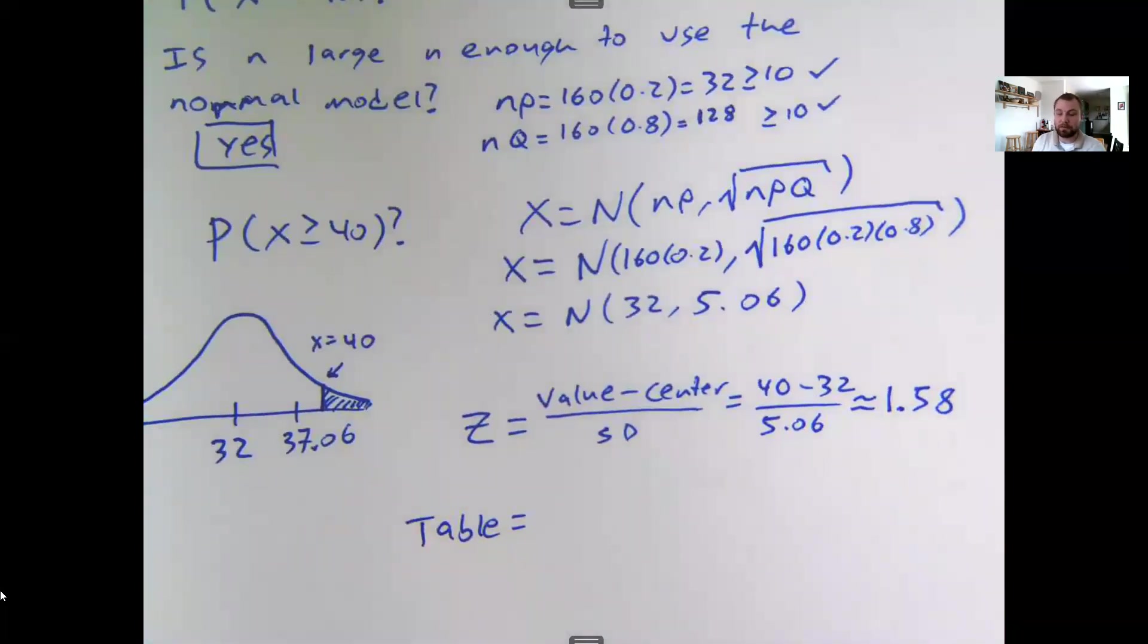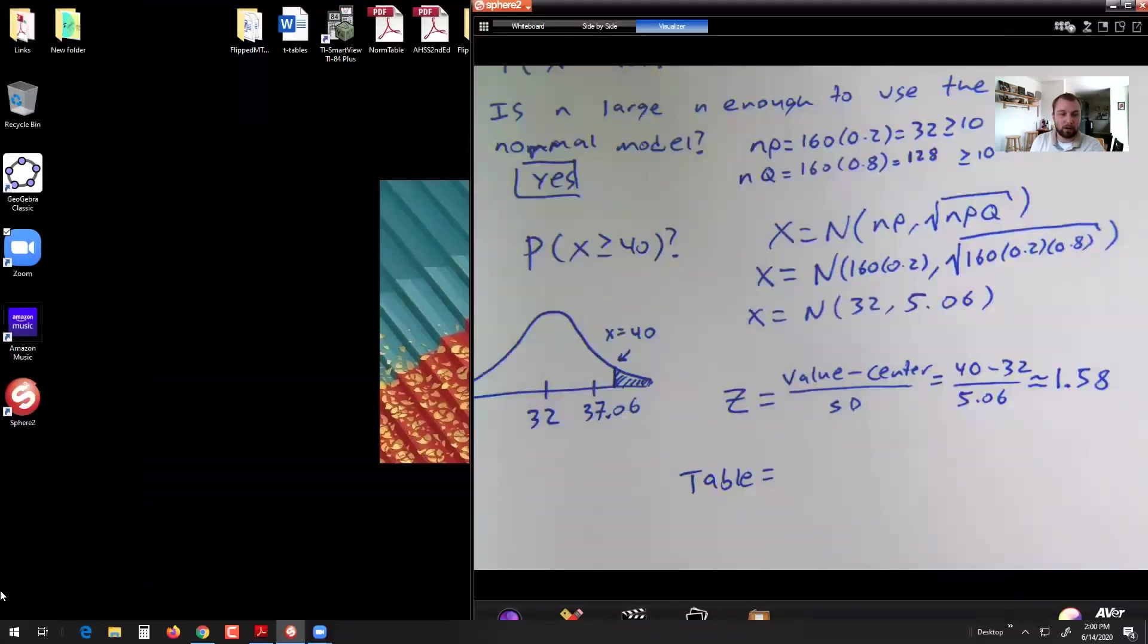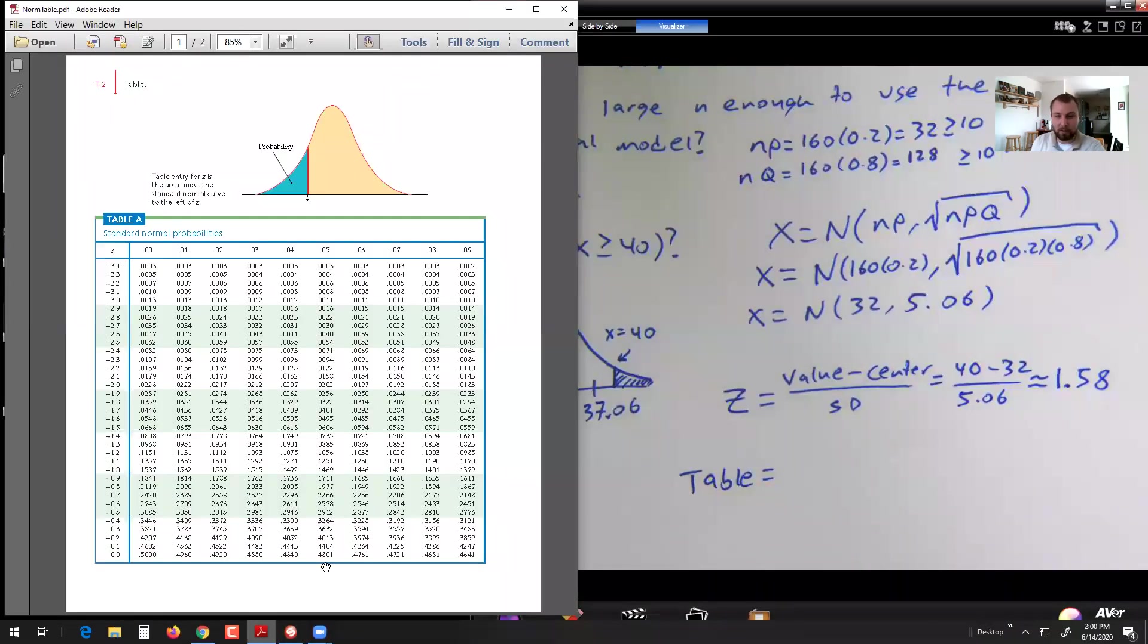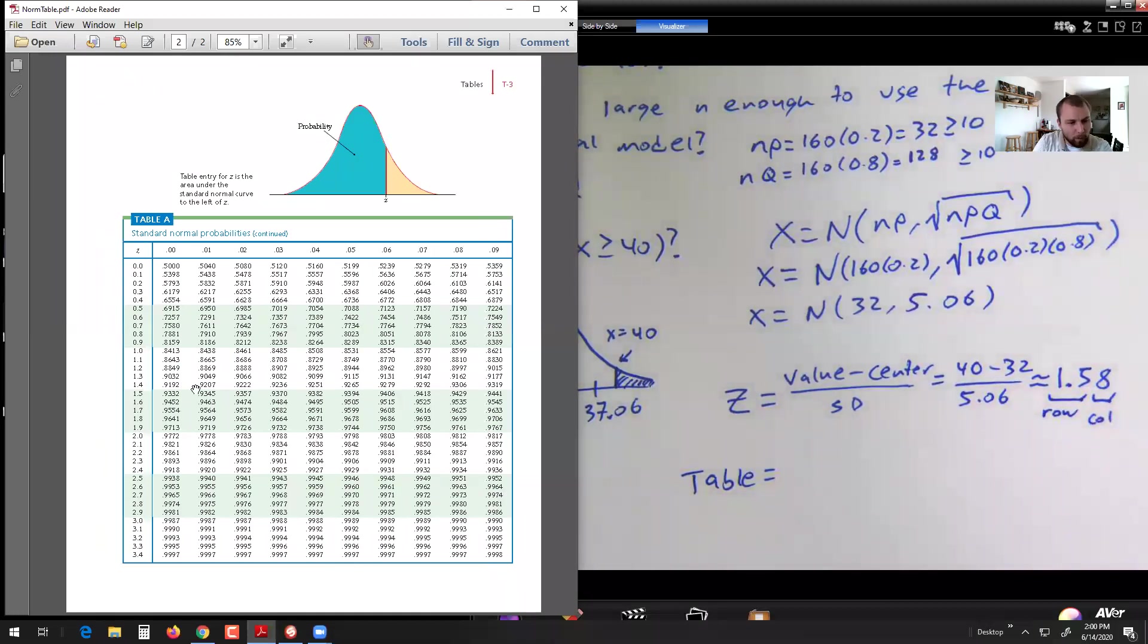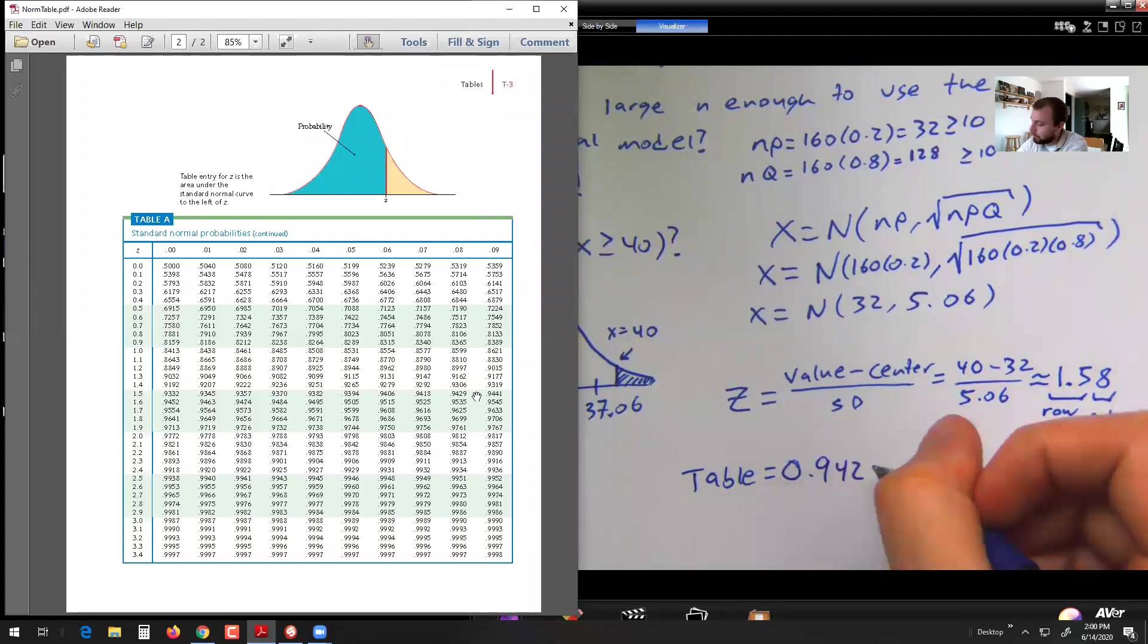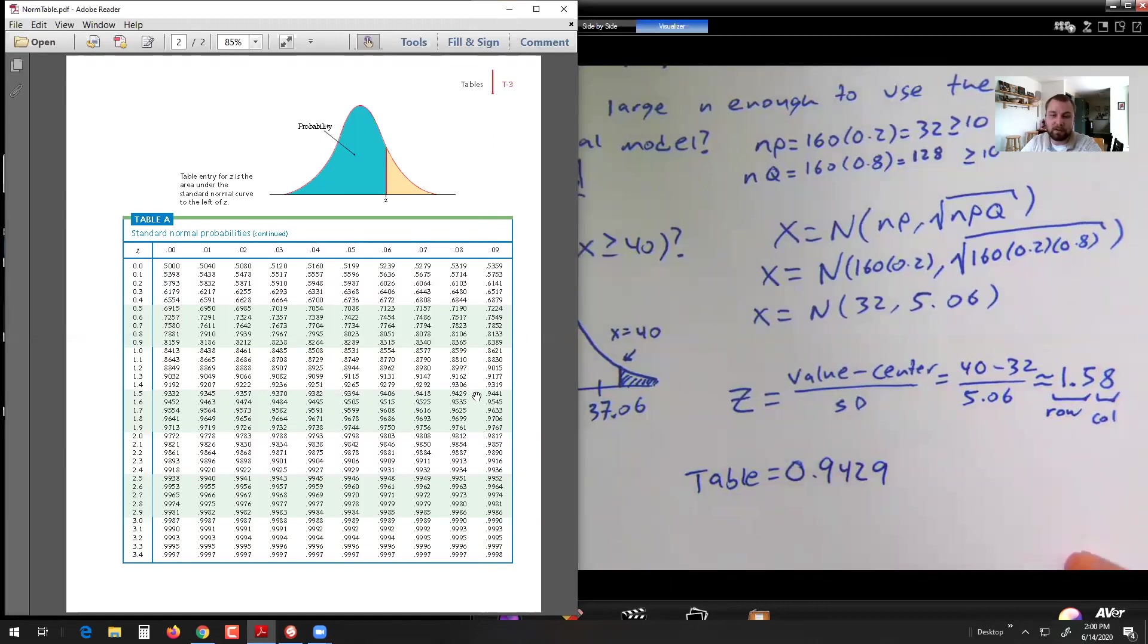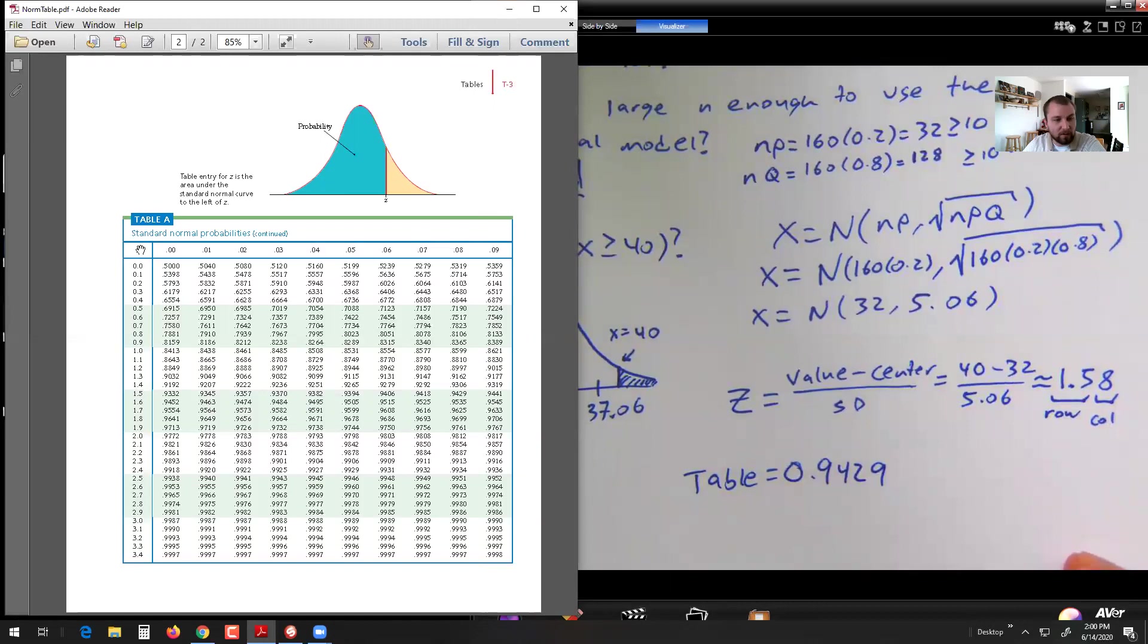Now I prefer looking up my z-scores using a table, but again, whatever you're comfortable with. And going to my normal table here, I am going to see where the 1.5 row meets the 8 column. 1.5 meets the 8 here at a table value of 0.9429. Now if you've never used a table before, just a quick note, this is a grid, you're looking up the first two digits of your z-score here, the last digit of your z-score here, and you're seeing where they meet.